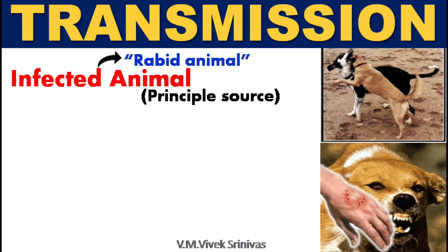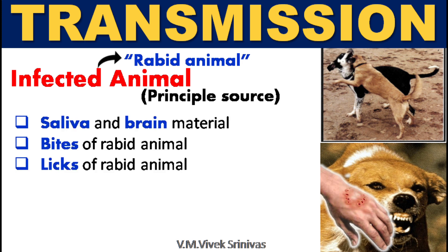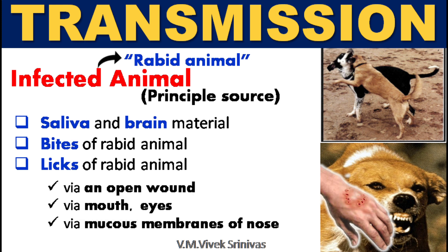Source of Infection. Infected animal, that is rabid animal, acts as the principal source of this virus. Transmission is through saliva, brain materials, bites of rabid animal, and licks of rabid animal through an open wound — also through mouth, eyes, and through mucous membranes of nose.